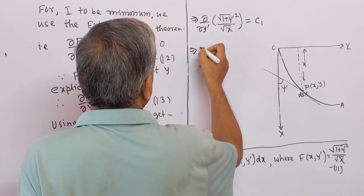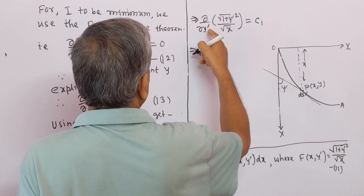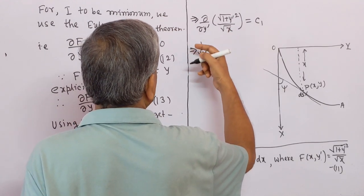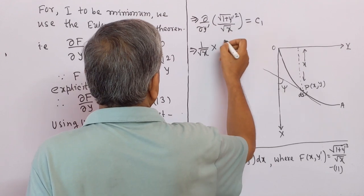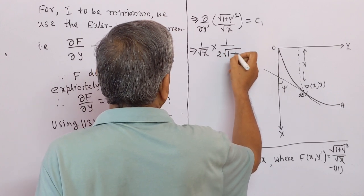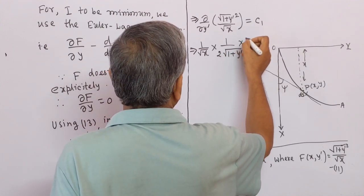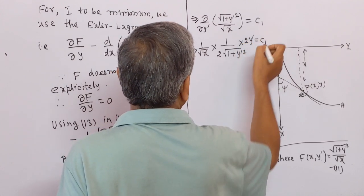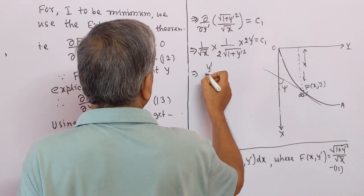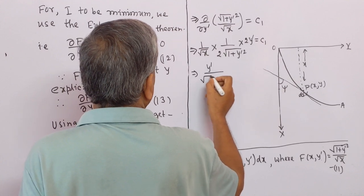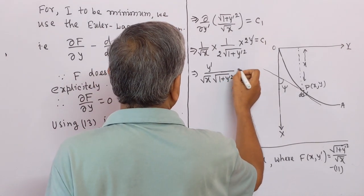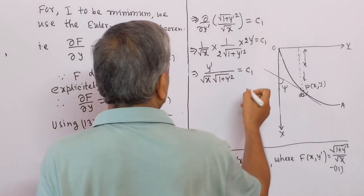Since we differentiate partially with respect to y', the x term is treated as constant and taken outside. The partial derivative gives (1/√x) · (1 / (2√(1 + y'²))) · 2y' = c₁. Simplifying, y' / (√x · √(1 + y'²)) = c₁. Let this be equation number 15.